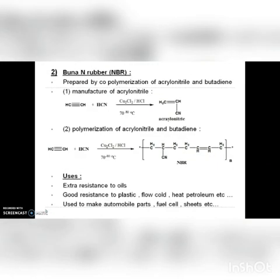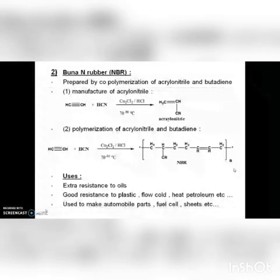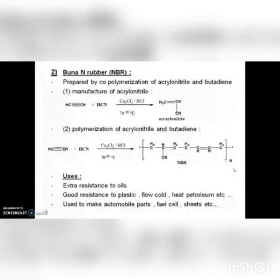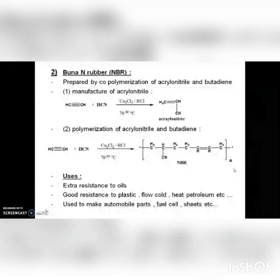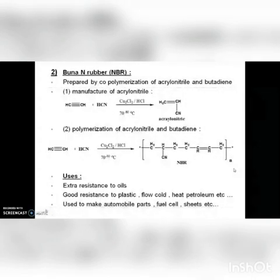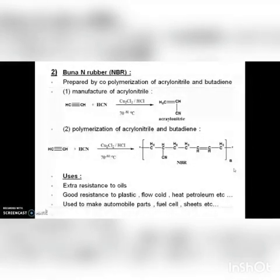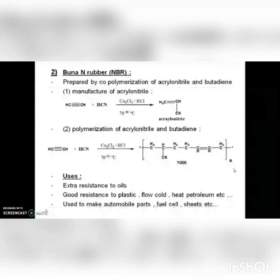The second elastomer is Buna-N rubber, also known as nitrile rubber. It is prepared by the copolymerization of acrylonitrile and butadiene. The monomer acrylonitrile is prepared by the reaction between acetylene and hydrogen cyanide. Buna-N has extra resistance to oils, and good resistance to plastic flow, cold, heat, and petroleum. It is used to make automobile parts and fuel cell sheets.